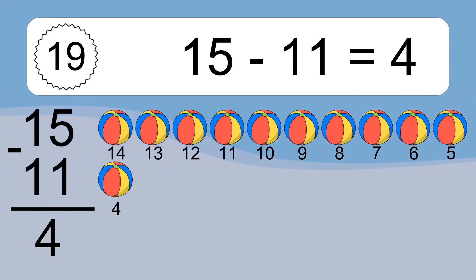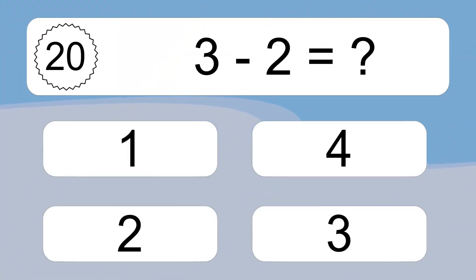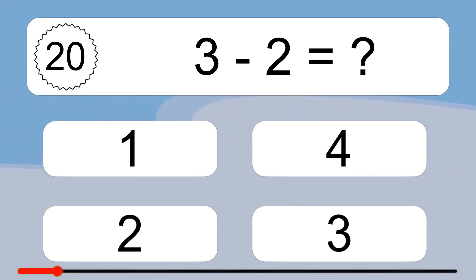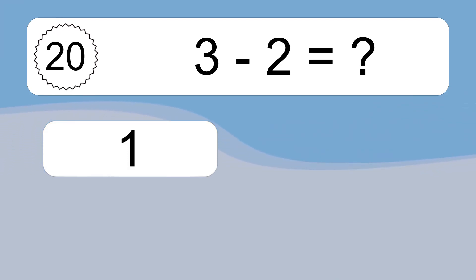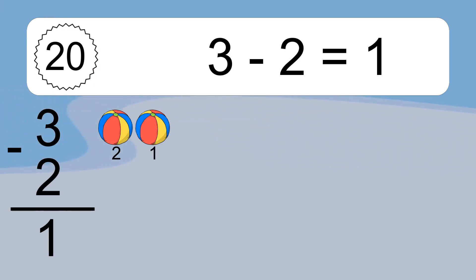3 minus 2 equals what? 3 minus 2 equals 1. Let's count it: 2, 1.